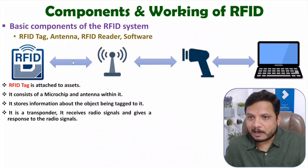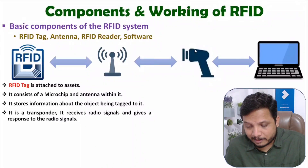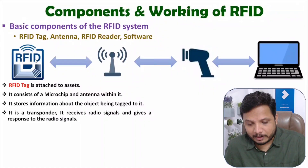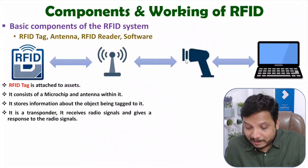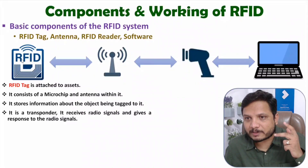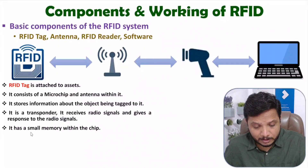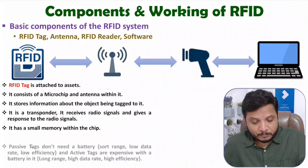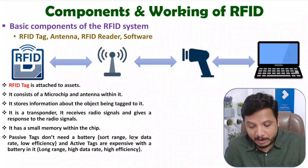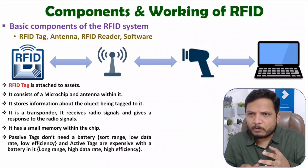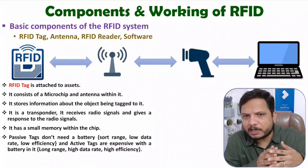The RFID tag is not transmitting data continuously. When the RFID reader gives a radio command, then the tag will give a response; otherwise it will stay in sleep mode. Based on that, a radio signal will come back at the RFID reader and the reader will have information about the status of the RFID tag. So one can track the RFID tag, which is attached to the object — indirectly we are tracking the objects. There are two types of tags: passive tags and active tags. Passive tags don't need a battery. Those passive tags have a shorter range, lower data rate, and lower efficiency — communication up to around 30 feet only.